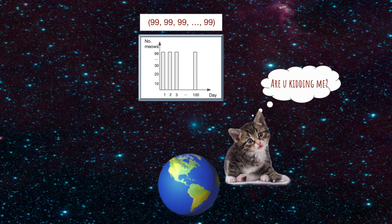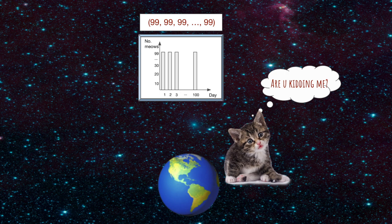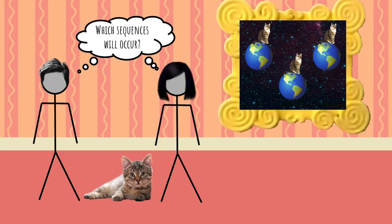Even if we can't predict what the sequence of meows will be, it seems like some sequences, like 99 meows for 100 days in a row, are not likely to happen in any universe. They wonder what sequences will occur.